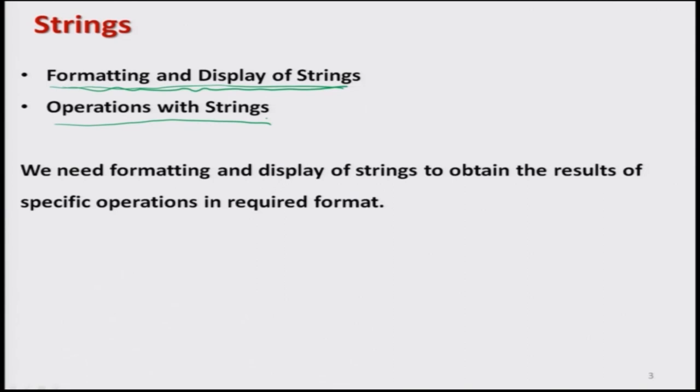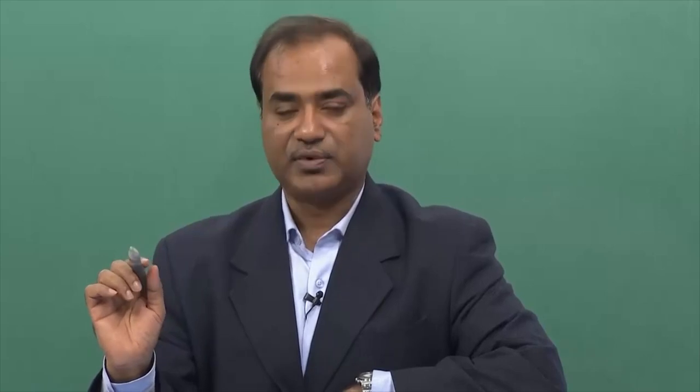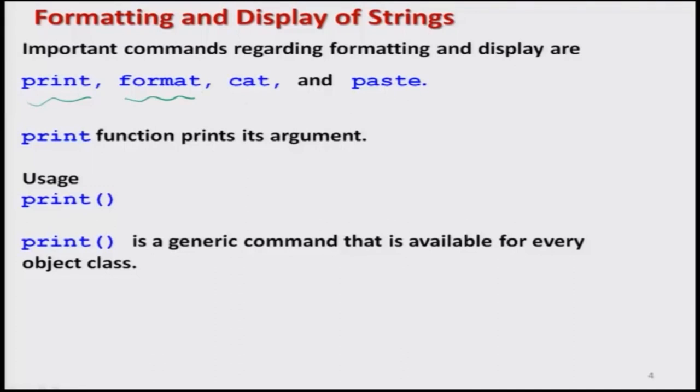We have two options: how to format and display strings, and how to do operations with different types of strings. For example, if there are 3 students, the names can be printed as student 1, student 2, student 3 in a sequence — row-wise or column-wise. We are going to discuss all those aspects here. For that we have several commands: print, format, cat, and paste. First of all, let us try to understand how to use the function print.